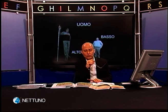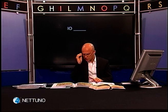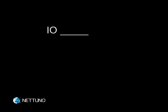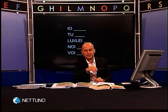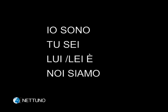Proviamo ora a fare qualche altro esercizio. Ecco il primo: inserite nello spazio vuoto le forme del presente del verbo essere che mancano. Io, tu, lui, lei, noi, voi. Vediamo le soluzioni: io sono, tu sei, lui/lei è, noi siamo, voi siete.